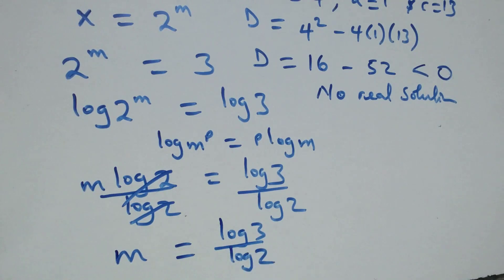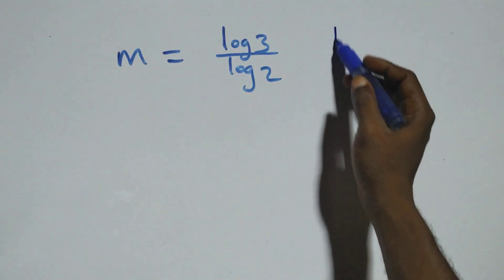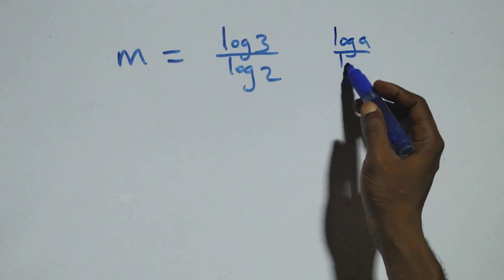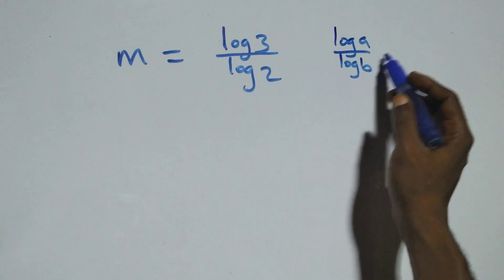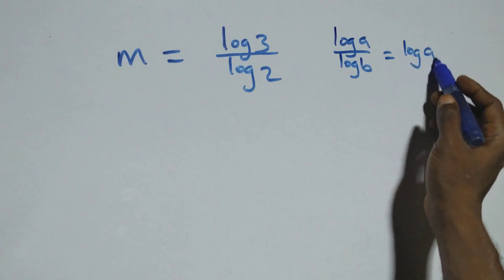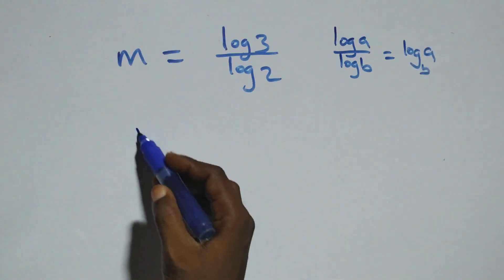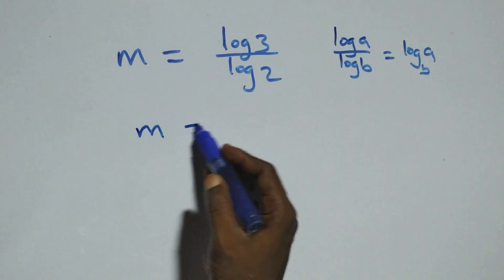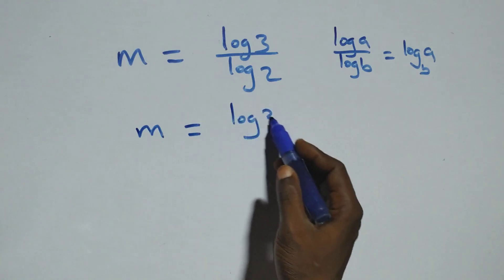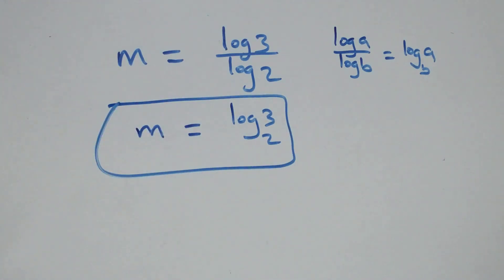Then also here we apply change of base: when we have log a over log b, which is the same thing as log a to base b. So here we have m equals log 3 to base 2, and here we have the solution to this problem.